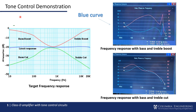Last but not least, since we designed a Class-D audio amplifier with tone control circuits, it is important to demonstrate tone control. The target is for the tone control circuits to increase or decrease both bass and treble audio signals. The oscilloscope waveform shows the blue curve as magnitude in dB and the red one as phase. For the frequency response with bass and treble boost, the blue curve trend closely matches the target, confirming we can increase both bass and treble audio signals.